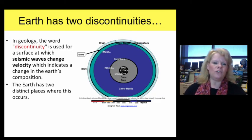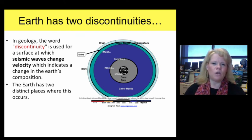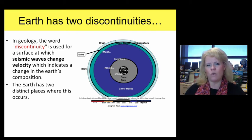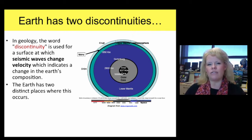In geology, one of the first things we need to talk about is the fact that the Earth is not consistent all the way through the inside. We can calculate what type of rock or material the Earth is made of by sending seismic waves — earthquake waves — down inside the Earth. We can simulate that and take a look at the travel path of P and S waves.